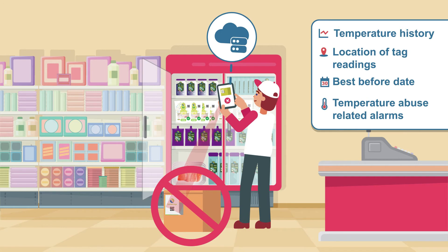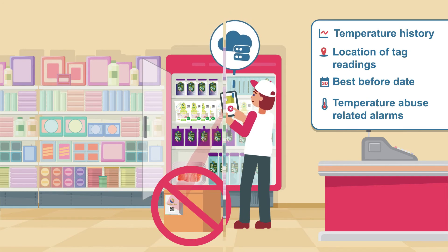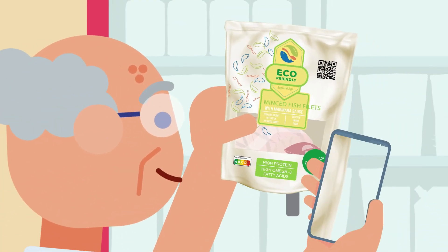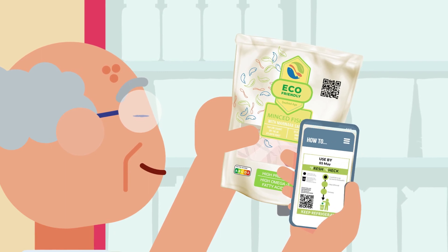The final consumer will access the product information using a smartphone and the unique QR code, and will obtain updated information on the best before date of the product.